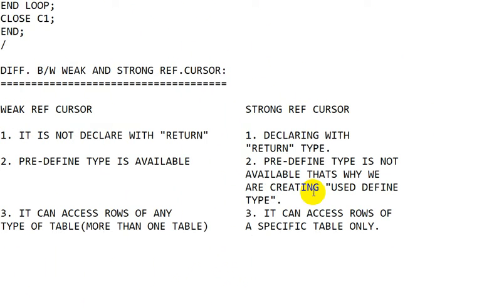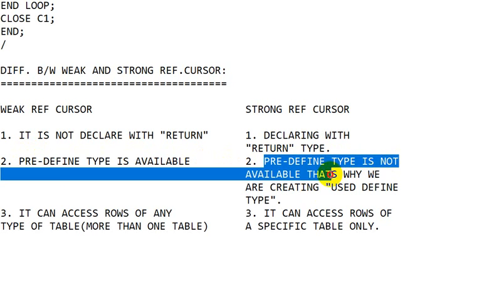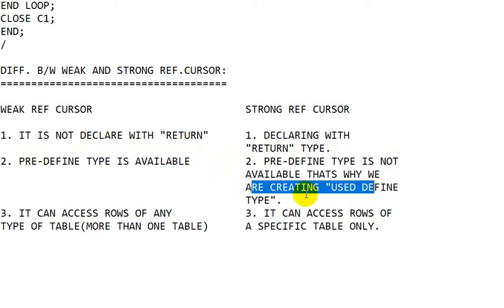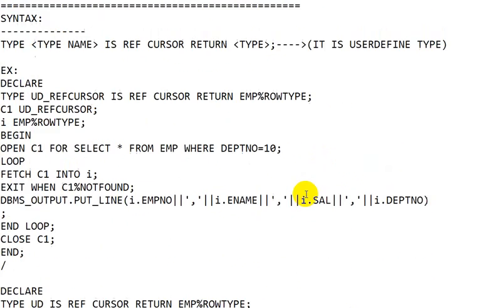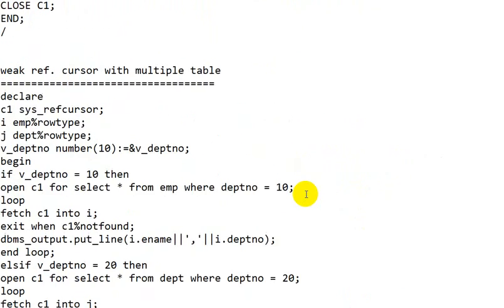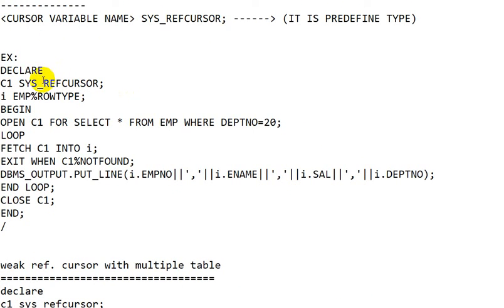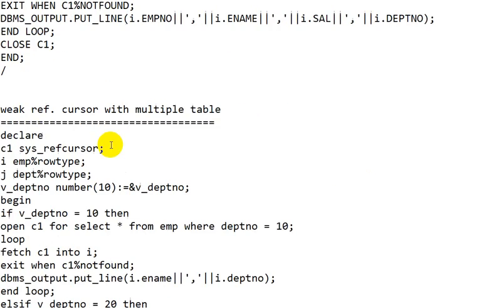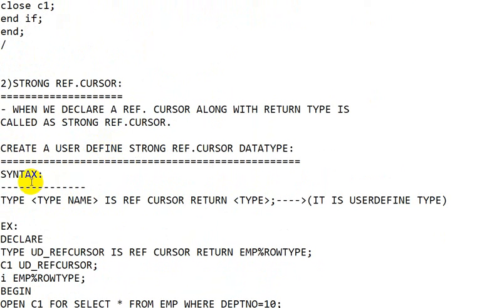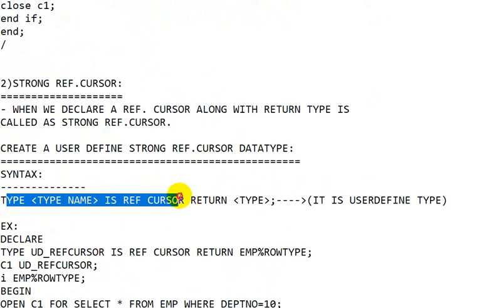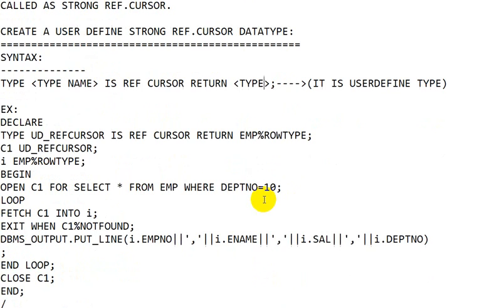The second difference is that a predefined type is available for the weak REF CURSOR, but for the strong REF CURSOR a predefined type is not available — that's why we create a user-defined type. For the weak REF CURSOR, the predefined data type is SYS_REFCURSOR. But for the strong REF CURSOR, we need to create a user-defined type as: TYPE type_name IS REF CURSOR RETURN return_type.